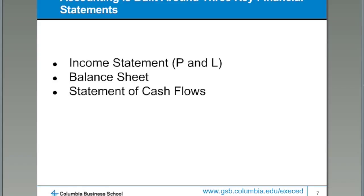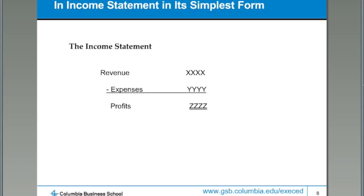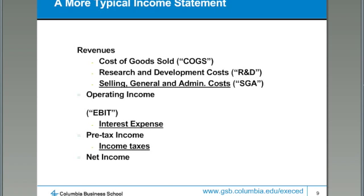All of accounting, which you'll learn in the program, is built around three key financial statements. There's an income statement, which we sometimes call the P&L; there is a balance sheet; and there's a statement of cash flows. The income statement is really simple. My father was an accountant, and what he used to say is income is a really simple idea: we measure what we receive with the right hand, we measure what we give up to receive it with our left hand, and we hope the right hand is longer. Most income statements are just tracking revenues and expenses in the business and actually break up the expenses into various categories.